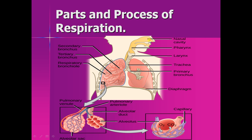Oxygen enters through the nostrils or nasal cavity, or through the mouth, and finally reaches the pharynx, then the trachea, then the bronchus, then the bronchioles, and finally reaches the air sacs. In the alveoli, oxygen is absorbed into the blood capillaries, transported toward the heart, and the heart then distributes that oxygen to each and every part of the body.